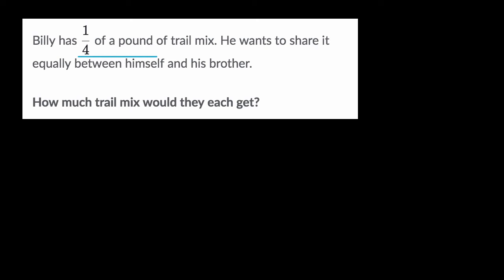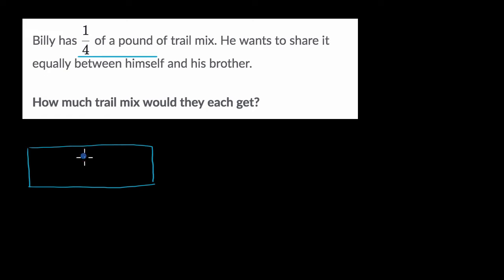Billy starts with one-fourth of a pound of trail mix. So how could we represent one-fourth? Well, if this is a whole pound — let's imagine this rectangle is a whole pound — I could divide it into four equal sections. This would be roughly two equal sections, and then if I divide each of those into two, now I have four equal sections.